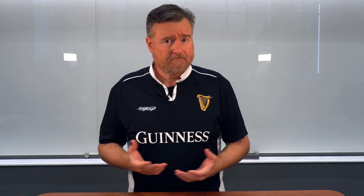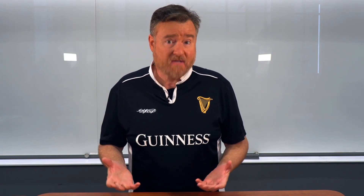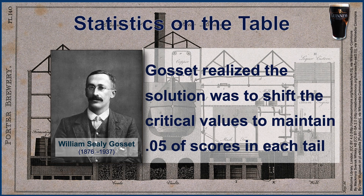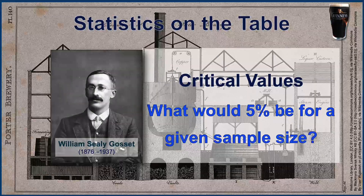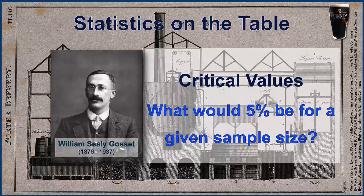If you think about it, the solution becomes obvious. Gossett realized that the solution was to shift the critical value to maintain 5% of the scores in each tail. However, the amount of shift would depend upon the sample size. Therefore, he needed to calculate a new critical value for every single sample size, each time asking what would 5% be for this specific sample.